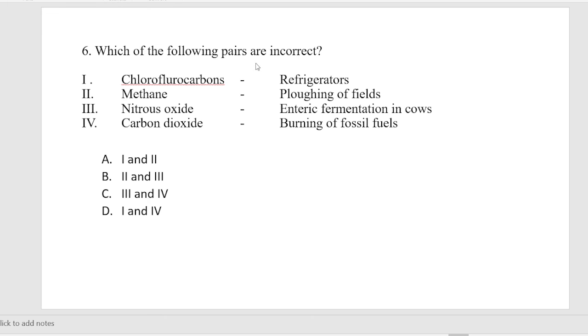Which of the following pairs are incorrect? First, CFC and refrigerator is correct. Methane and ploughing of fields is incorrect. Nitrous oxide and entry fermentation in cows is incorrect. Nitrous oxide is called laughing gas. Carbon dioxide and burning of fossil fuels is correct. So the incorrect pairs are second and third. This is the answer.